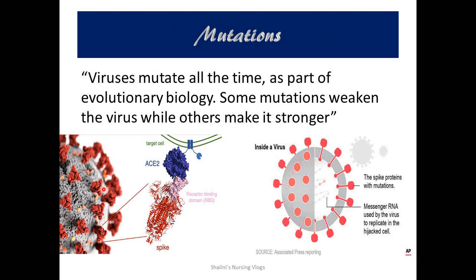If you look at the first picture in this panel, you have spike proteins over the base of the virus. These spikes are exactly responsible for binding onto the ACE2 receptor site in the human body. Mutations can take place either on the spike or on the surface of the virus cell. Viruses mutate at all times as part of evolutionary biology — some mutations weaken the virus while others make it stronger. If the mutation is on the spike protein, it increases the transmission capacity of the virus.